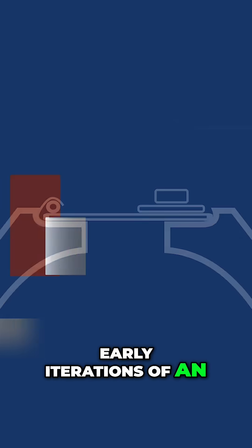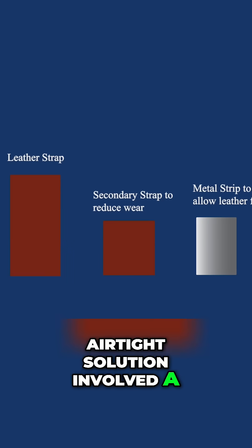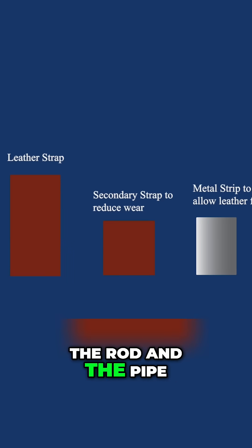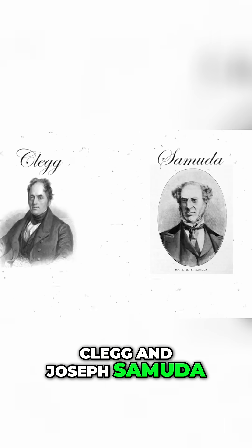Early iterations of an airtight solution involved a flap of leather between the rod and the pipe, known as the Clegg and Samuda patent, named after engineers Samuel Clegg and Joseph Samuda.